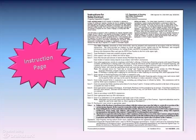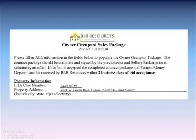The instruction page has line-by-line instructions for completing the HUD contract. Read this and keep a copy handy to check the accuracy of your contract preparation. A paper contract must be prepared and signed prior to submitting an online bid. The contract must contain the signatures of the buyer and the selling broker, and the selling broker must have earnest money in hand in certified funds prior to submitting the bid online. There are no exceptions to this rule.